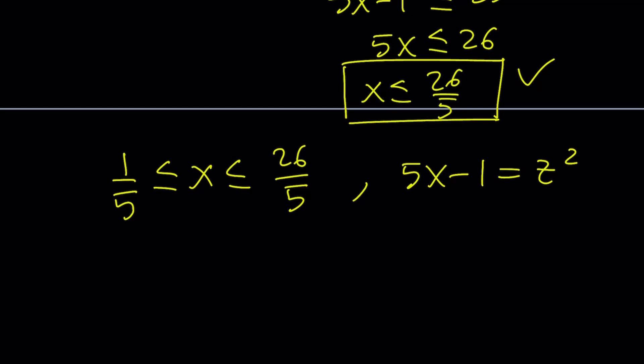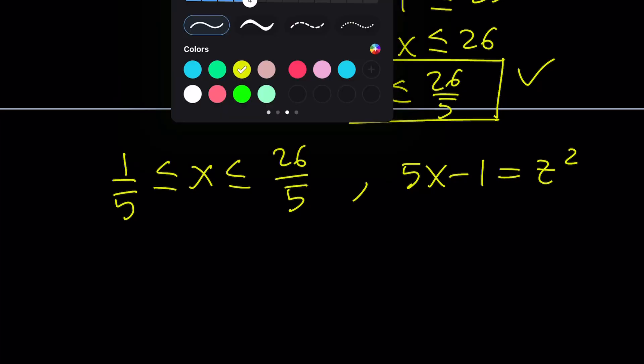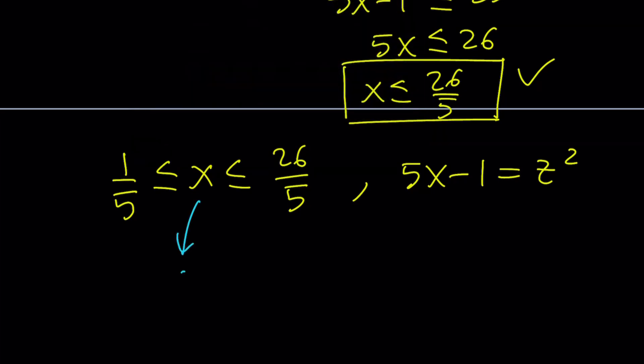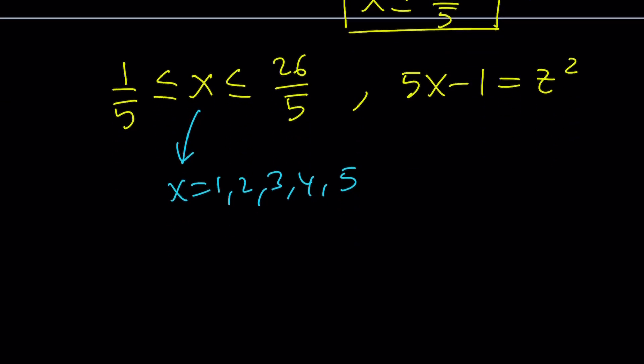First of all, think about this. If x is on this interval, I can only use certain values of x, such as x can be 1, 2, 3, 4, and 5. x can't be 6 because that exceeds 26 over 5, which is 5.2. So, those are possible x values, but are they all going to work? I don't think so. Let's go ahead and plug in and find 5x minus 1 for each case.